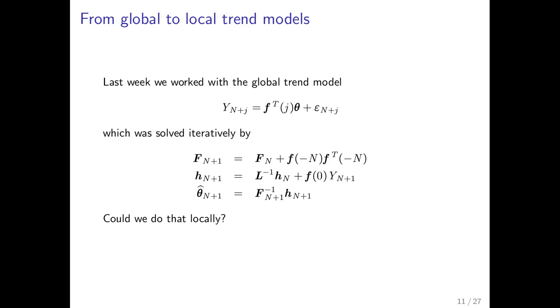So first just a very quick recap. We have the definition of the trend model as given up here where everything is relative to the current point in time and what we showed was that we could solve it iteratively by just adding and updating the upper case F operator and the h vector here and then it's just F inverse times h gives you the corresponding estimate of theta.